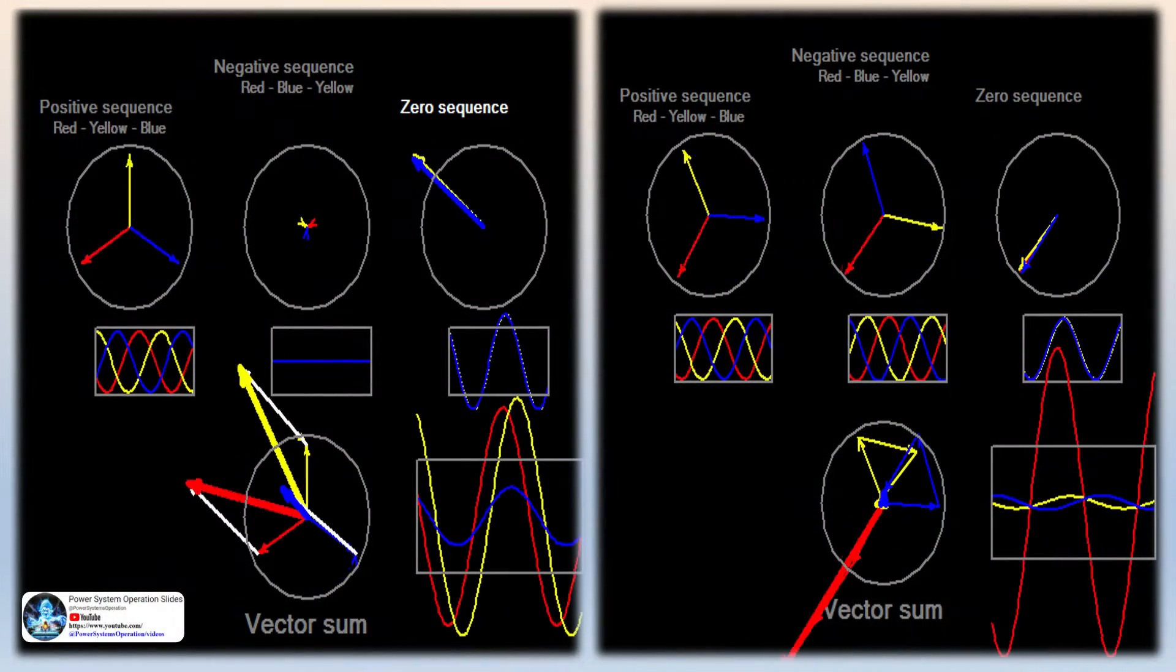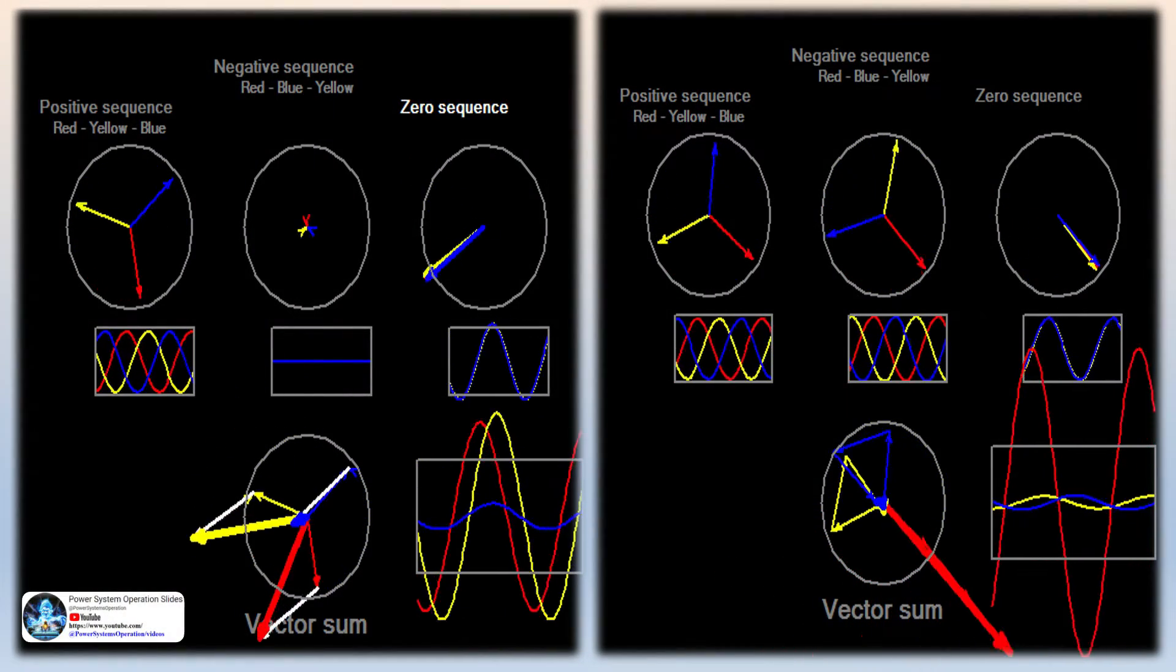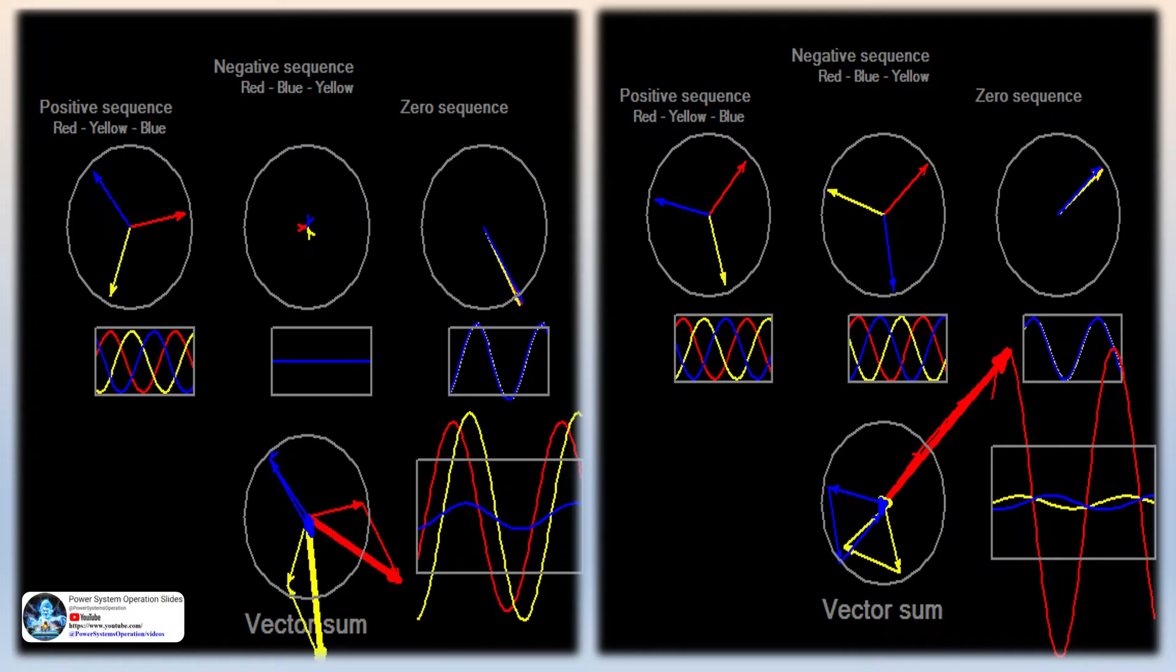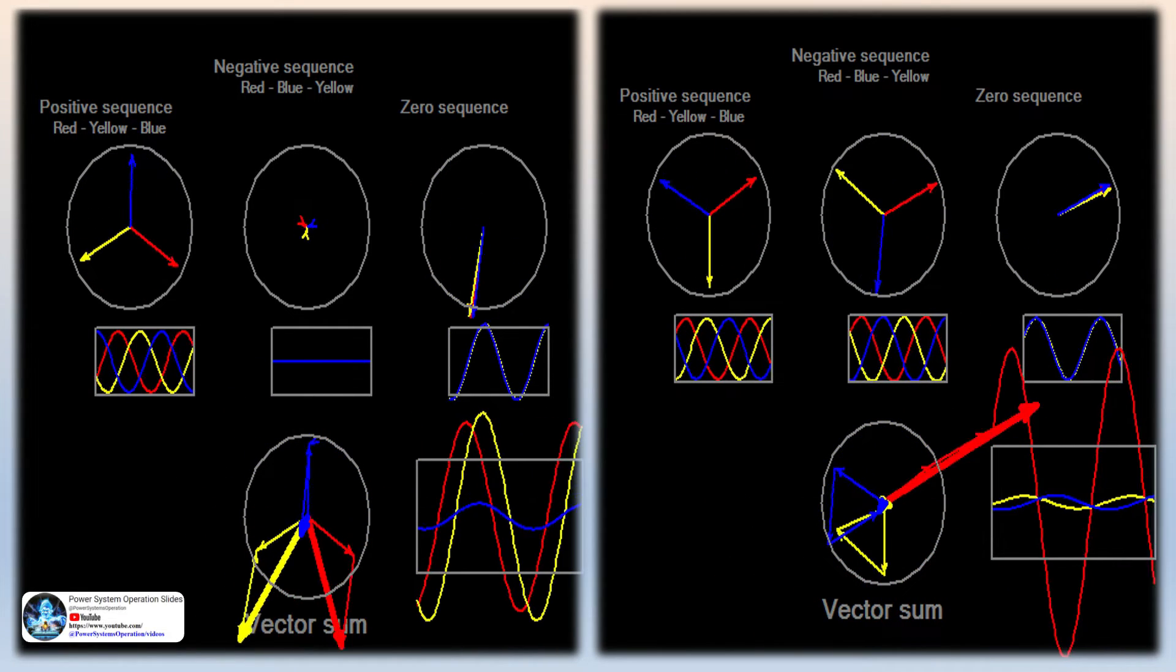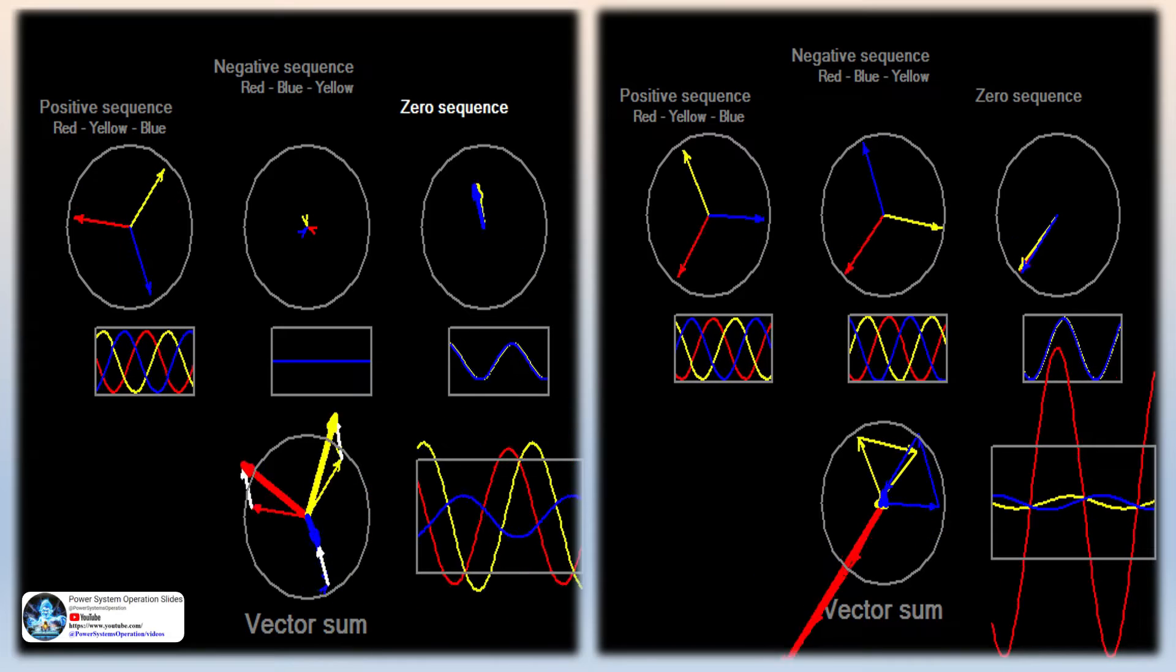These components allow for the simple analysis of power systems under faulted or other unbalanced conditions. Once the system is solved in the symmetrical component domain, the results can be transformed back to the phase domain.